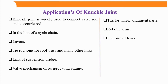Knuckle joint is widely used to connect valve rods and eccentric rods. The second common application is as a link in a cycle chain — those connected links in a bicycle or two-wheeler chain are connected using knuckle joints. It is also used in various types of hand levers and foot levers, as well as in tie rod joints for roof trusses.